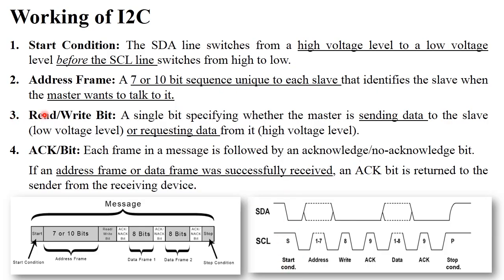The next step is the address frame. The master sends an eight-bit data frame to the slave. The address frame contains the address of the specific slave device. For example, suppose there is one processor with three printers connected to it — printer one, two, and three. If the CPU wants to send data to printer three, the address frame contains the address of printer three. The next bit is the read/write bit, which indicates whether the master is performing a read or write operation.